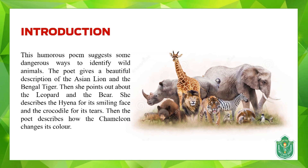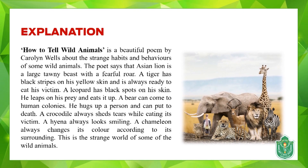The poet gives a beautiful description of the Asian lion and the Bengal tiger, then points out the leopard and the bear, describes the hyena for its smiling face, and the crocodile for its tears. She also describes how a chameleon changes its color — a reptile known for changing color according to its surroundings — and covers strange habits and behaviors of some of these wild animals.